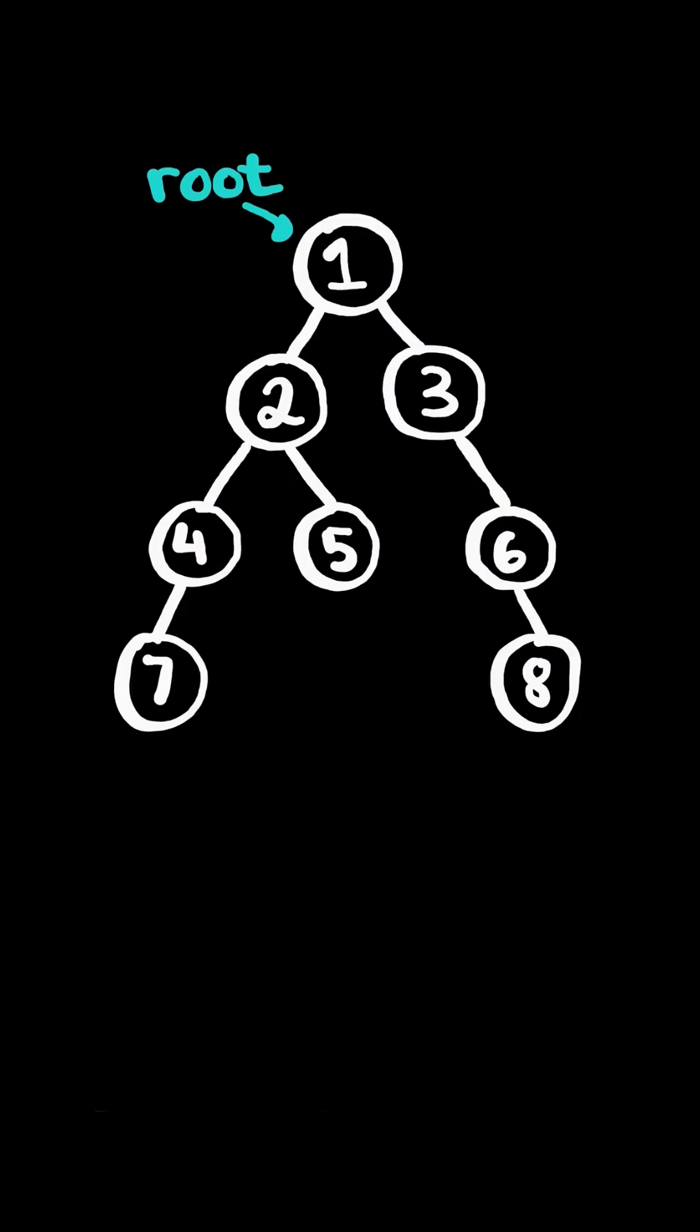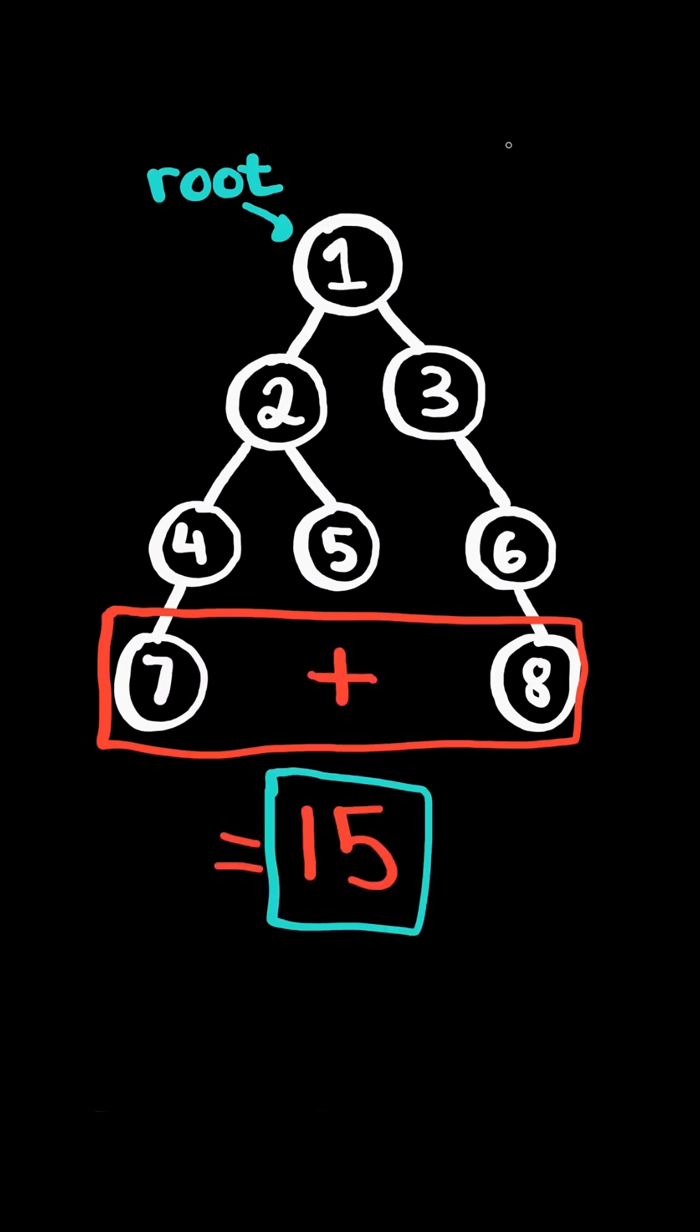Deepest leaves sum. Given the root of a binary tree, consider the deepest level of the tree. Return the sum of all the values of the deepest level.